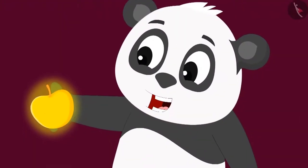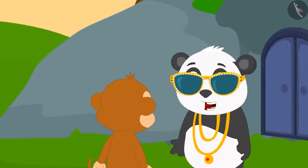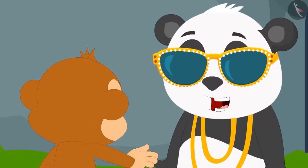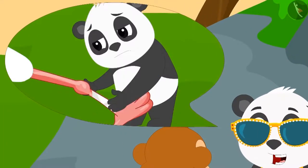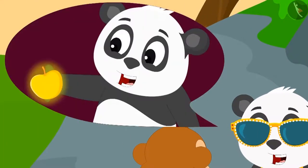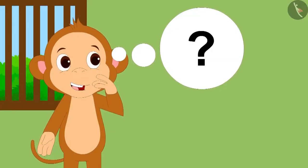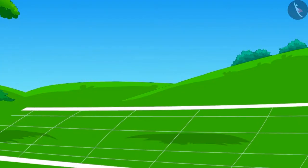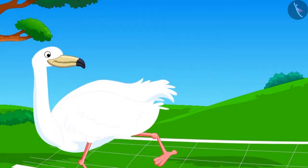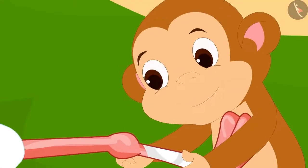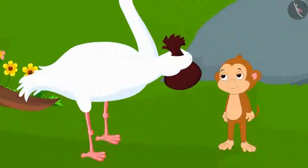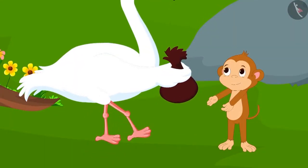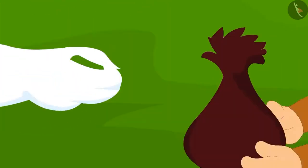Babban wanted to know the secret behind Golu becoming so rich suddenly. Golu narrated the entire story. The next day, Babban injured the bird by laying a trap, then took care of the bird just like Golu. And the bird recovered. Before leaving, the bird gave some seeds to Babban too.